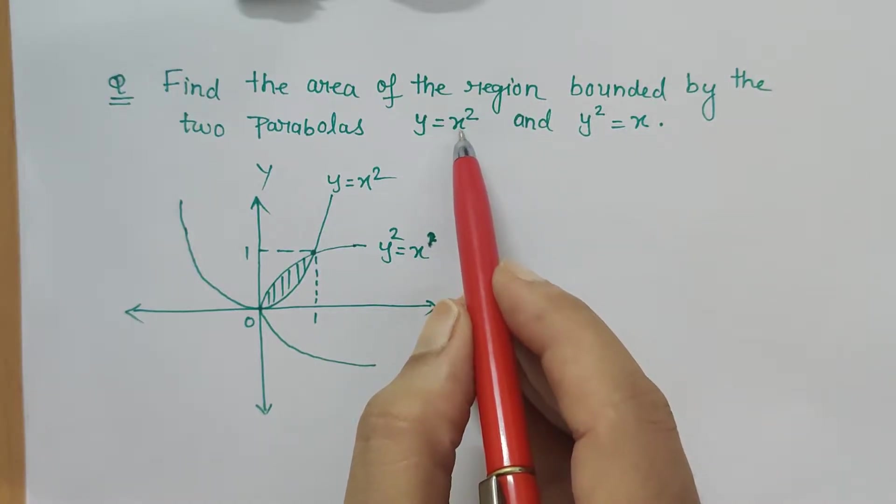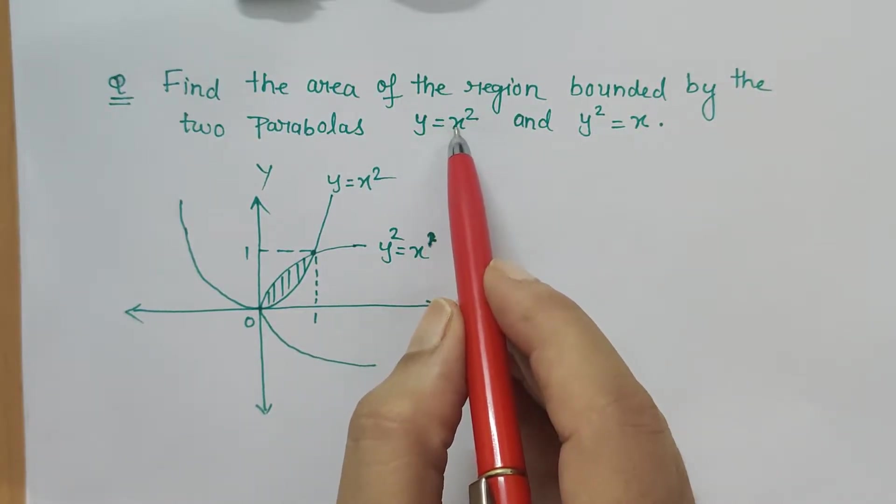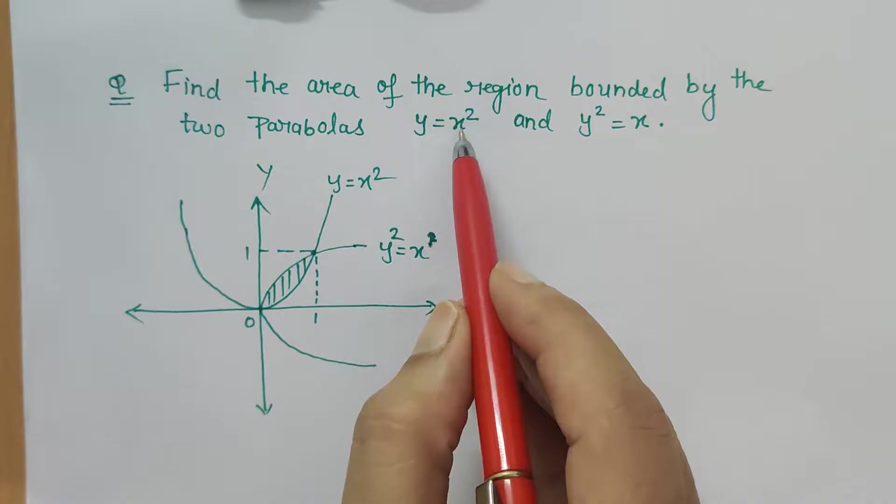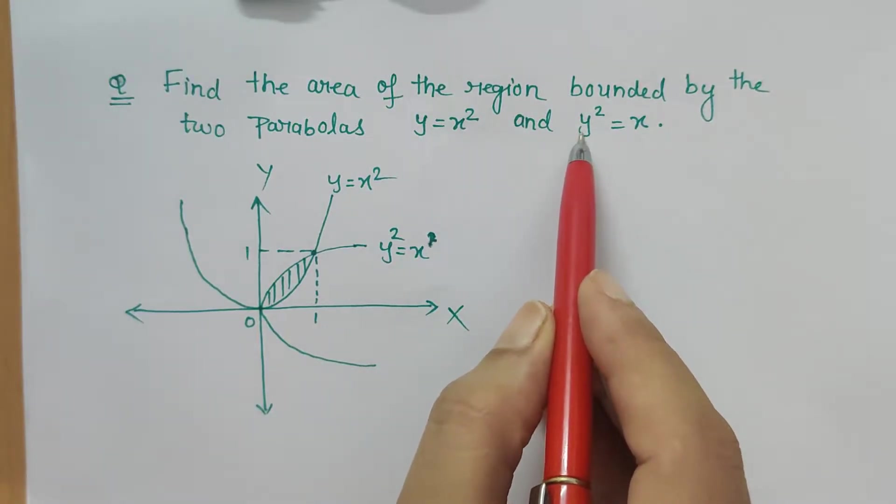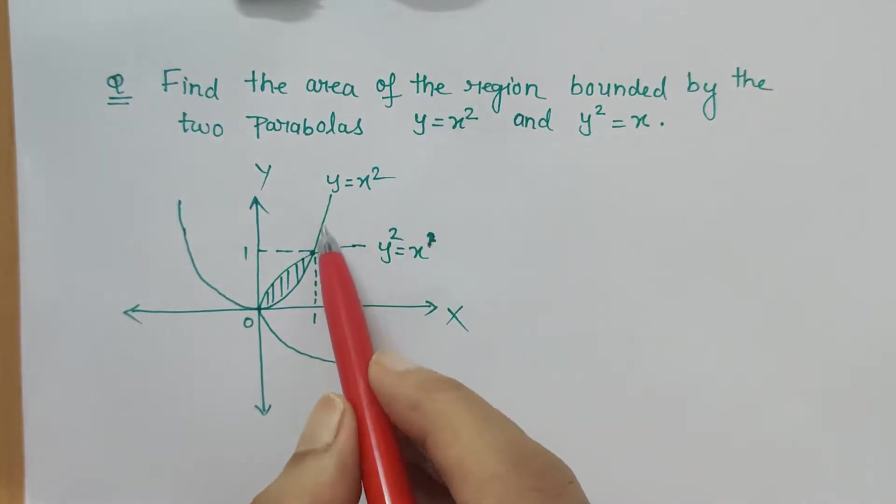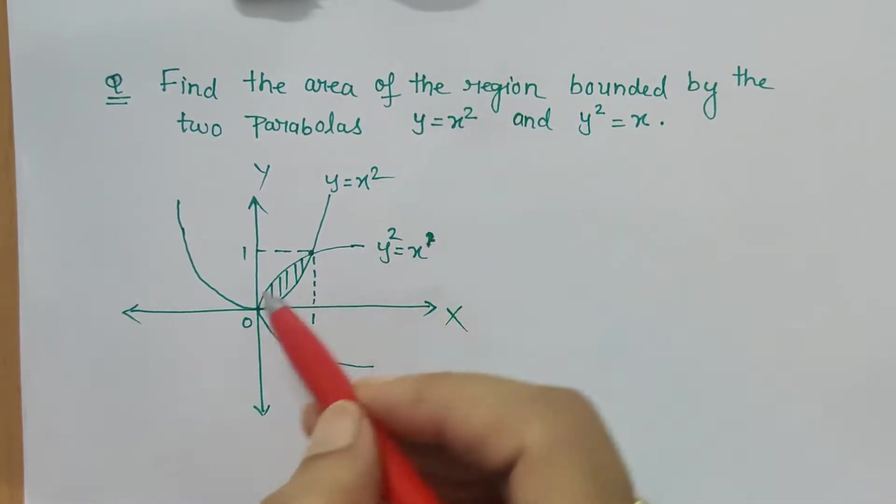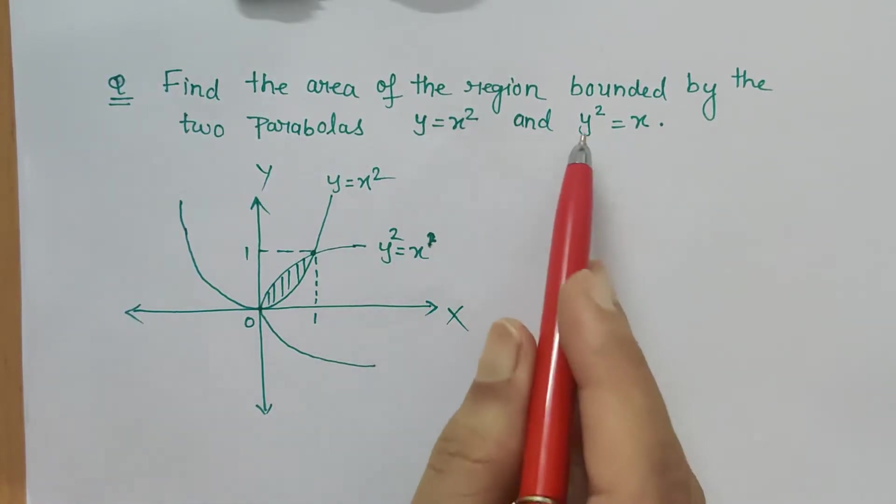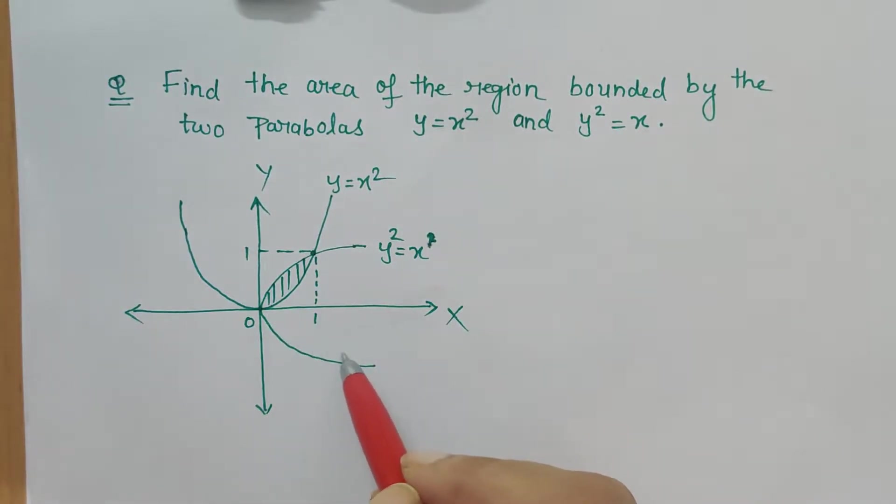In my previous video I explained when it is x² = y, the curve will be symmetric along the y-axis, and when it is y², it will be symmetric along the x-axis. So x² = y is this curve and y² = x is this curve.